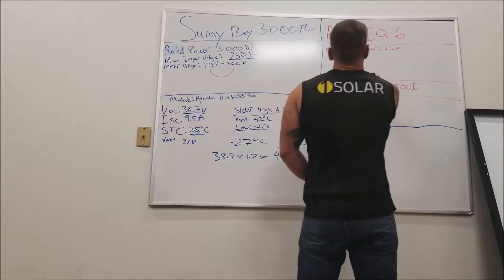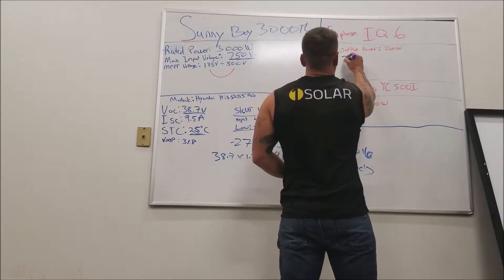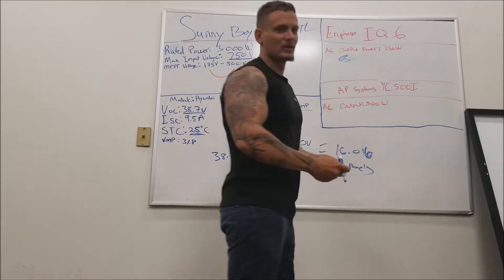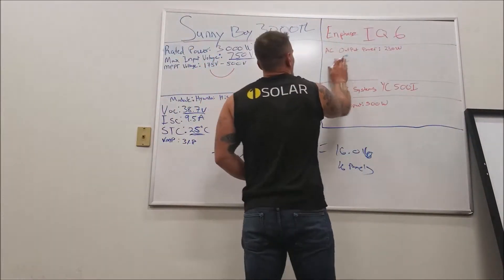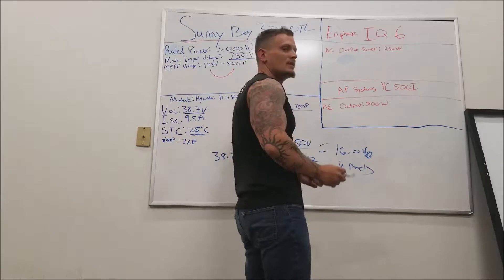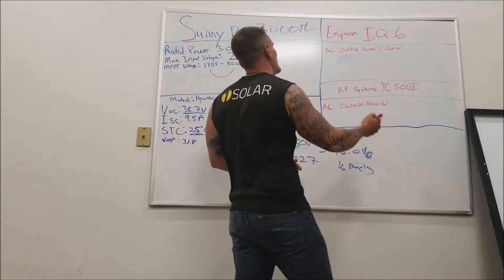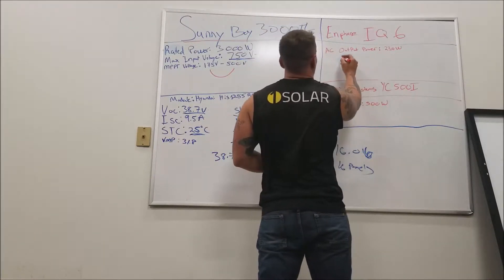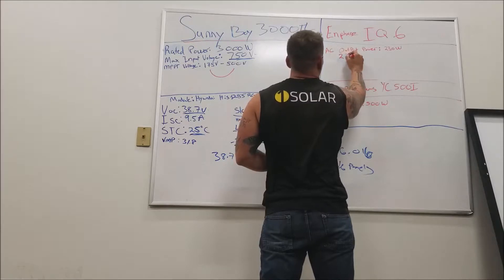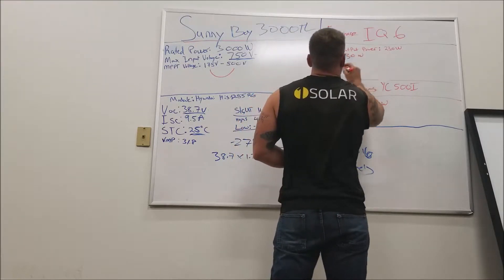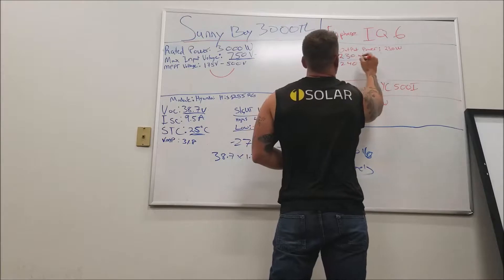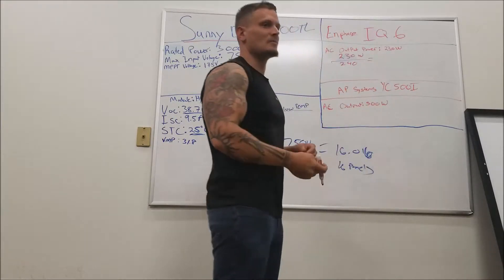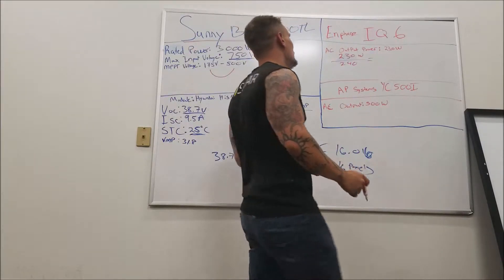Now for branch circuits — 230 watts. This is a single-family dwelling, so we're at 240 volts residential in the United States. So 230 divided by 240 gives us 0.958 amps, because watts divided by volts gives us amps.